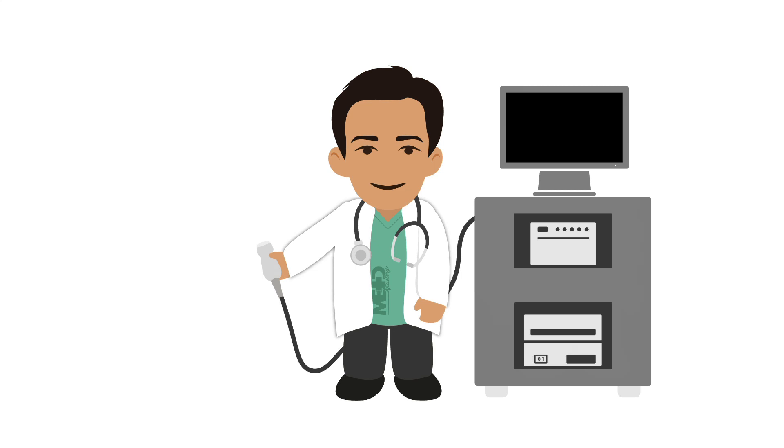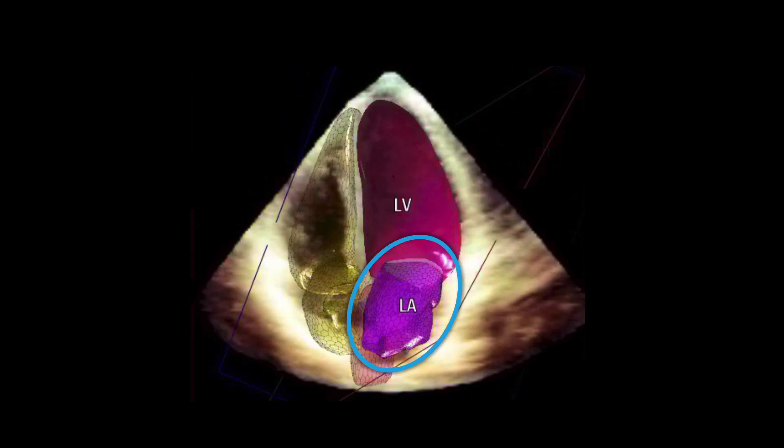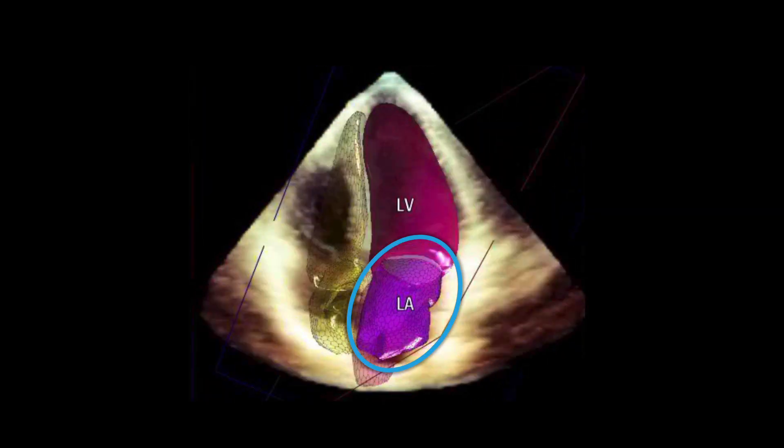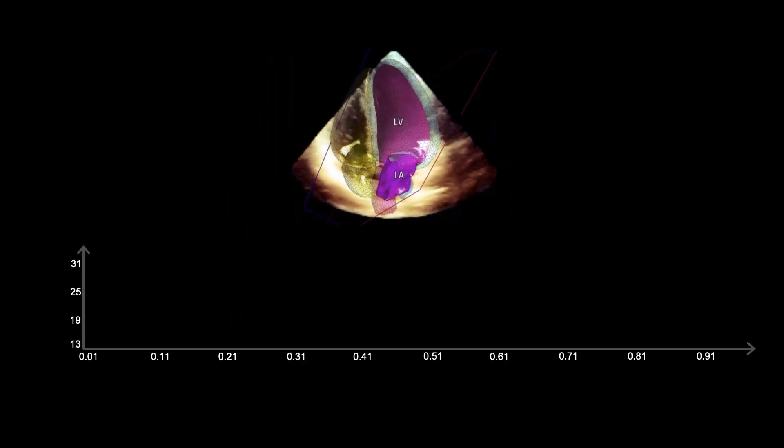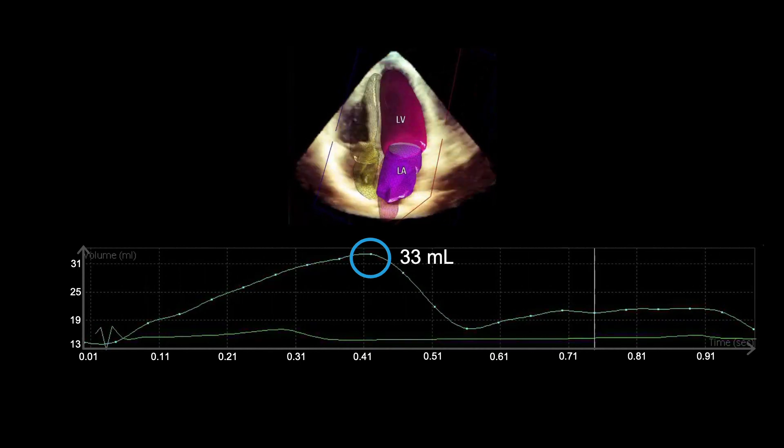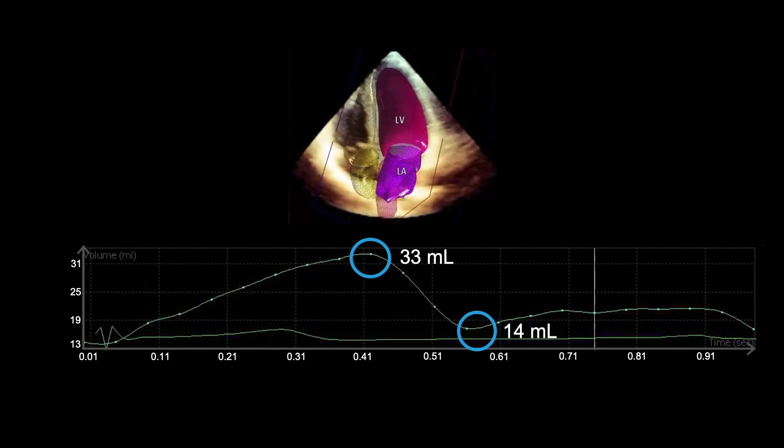Let's look at how we assess left atrial dilatation in 3D echo. Left atrial size can be appreciated with 3D imaging continuously throughout the cardiac cycle. The left ventricle can also be seen here. Here you can see the left atrium has a maximum volume of 33 milliliters and a minimum volume of 14 milliliters.